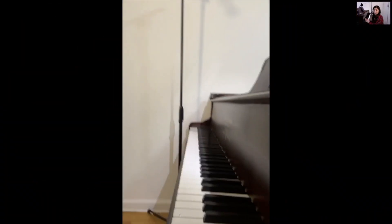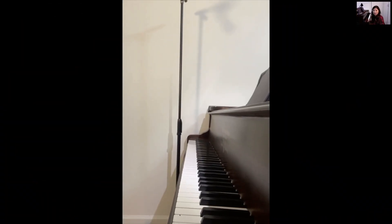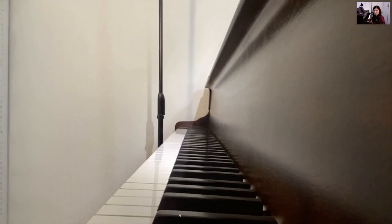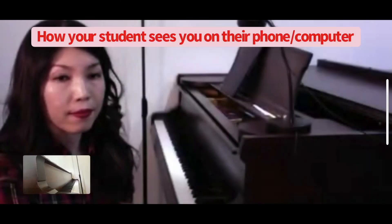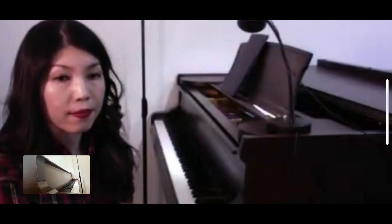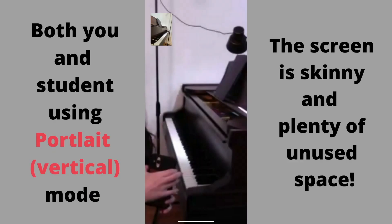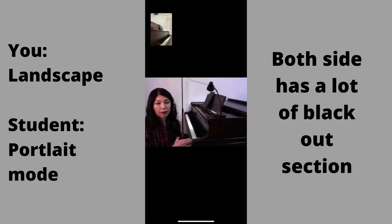This is when your student uses portrait mode — you can see these blacked-out sections. This is landscape mode, and you'll see better this way. This is vertical mode. So the bottom line is: both of you should use landscape mode. If your student uses vertical mode and you use horizontal mode, or vice versa, then the field of view is going to be so much narrower.